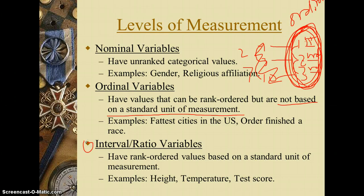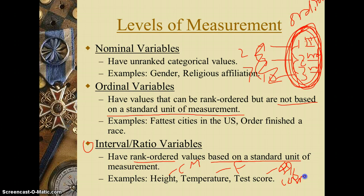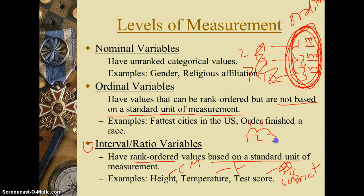Interval/ratio takes it a step further — they're rank ordered and also based on a standard unit of measurement. So if we do height in centimeters, temperature in Fahrenheit, or test scores in percent correct, these are all based on a standard unit. Going from one centimeter to two centimeters to three centimeters, we know exactly what the distance is: one centimeter each time. Unlike first, second, third in ordinal, where the distances were two minutes and seven minutes rather than equal intervals.